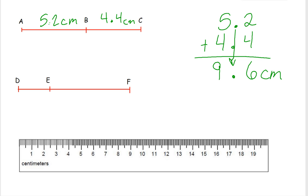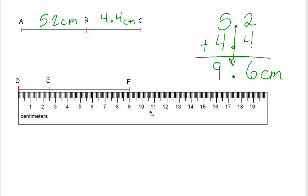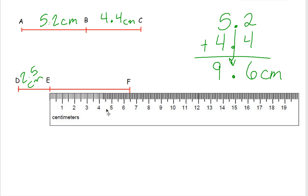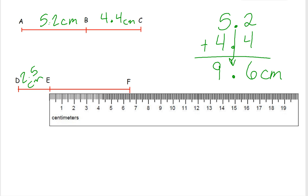So now we're going to measure DE and EF. If I take my ruler, and we see that DE is 2.5 centimeters. And EF is 6.5 centimeters.